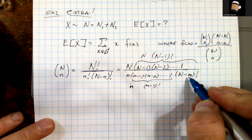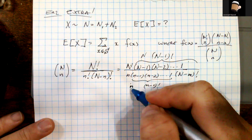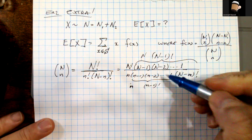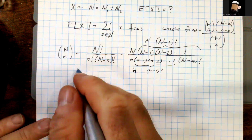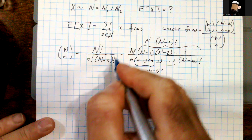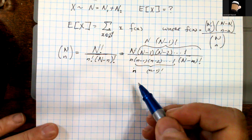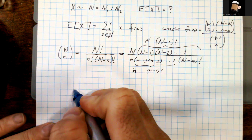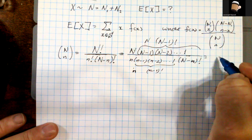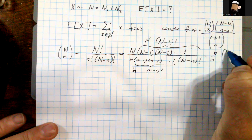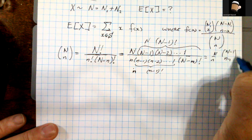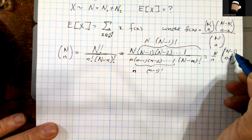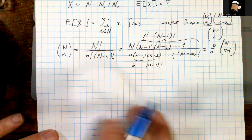This means that (N choose n) equals (N/n)·(N−1 choose n−1). That is, the ratio N over n times the binomial coefficient (N−1 choose n−1). So those are equivalent statements, and that's going to be really helpful when we plug this in to compute the expected value.